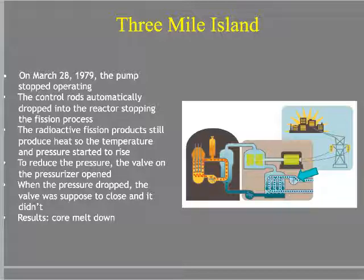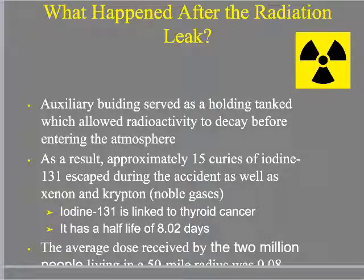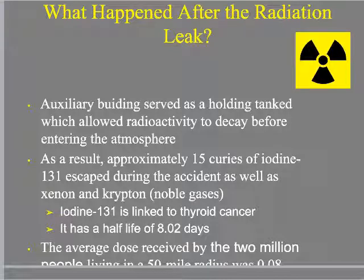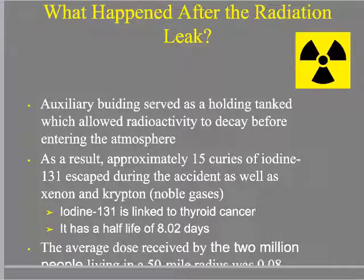Radioactive lava was now pouring into the Earth. However, the buildings had shielding around them and a containment unit beneath the reactor, which held much of the radioactive gas being released. A little bit was released into the atmosphere — approximately 15 curies of iodine-131, as well as some xenon and krypton. A very small, essentially unmeasurable amount leaked into the ground water around Three Mile Island.